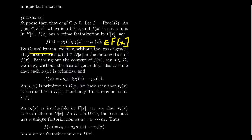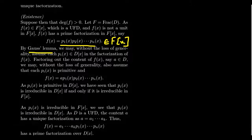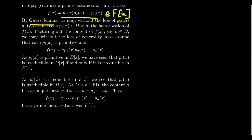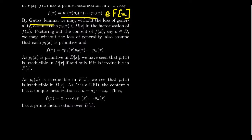Therefore, each Pᵢ(X) is irreducible in D[X] because it's irreducible in F[X] and is a primitive polynomial. Now, since D is a unique factorization domain, the content A of the polynomial has a unique factorization: A = A₁ · A₂ · A₃ · … · Aₖ, where each Aᵢ is an irreducible factor inside D. These are constant terms, so they can't be factored further in D[X] either. Therefore, the polynomial F(X) does have a factorization into irreducible elements — factor the content, factor the polynomial in F[X] — and this gives us a prime factorization. That's the first step toward being a UFD.